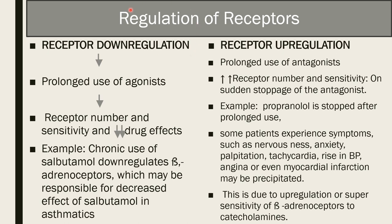Receptor regulation involves two types: down regulation and up regulation. Down regulation occurs with prolonged use of an agonist, causing a decrease in the number and sensitivity of receptors, thus decreasing the drug's effect. An example is chronic use of salbutamol causing down regulation of beta-adrenergic receptors, reducing its effect in asthma. Up regulation occurs with prolonged use of an antagonist — for example, propranolol. Sudden stoppage causes increased receptor number and sensitivity, leading to symptoms such as nervousness, anxiety, palpitations, tachycardia, rise in blood pressure, angina, or even myocardial infarction.